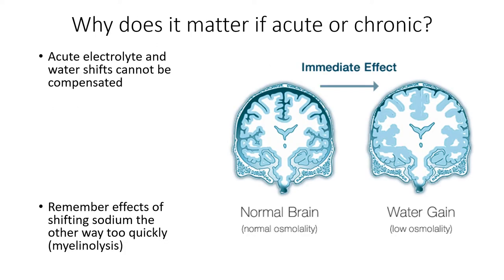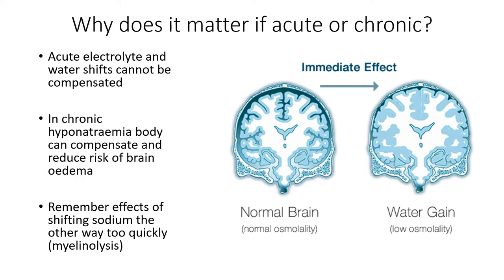So why does this matter? Acute electrolyte and water shifts can't be compensated — that's with sodium, potassium, calcium, whatever. Looking at the diagram on the slide, you can see a normal brain and what happens when you've got too much fluid on board, which is what occurs in hyponatremia: you get cerebral edema. With chronic hyponatremia, the body is able to compensate and reduces the risk of acute edema. With very low sodium in an acute setting, the brain swells quickly and you get severe problems and death.